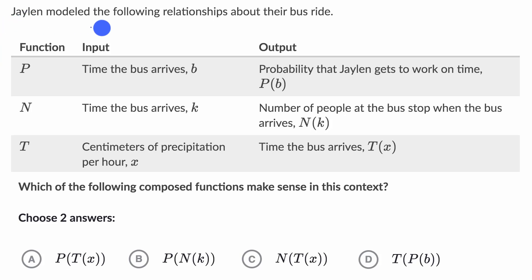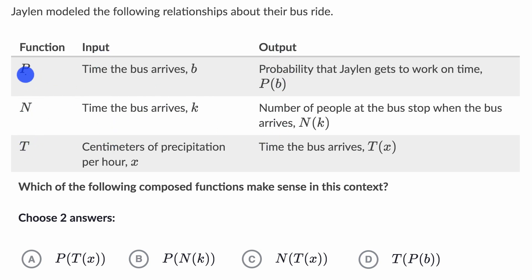We're told that Jalen modeled the following relationships about their bus ride. There are three functions with inputs and outputs. Function p has the input as the time the bus arrives, given as lowercase b, and the output is the probability that Jalen gets to work on time — so p of b.